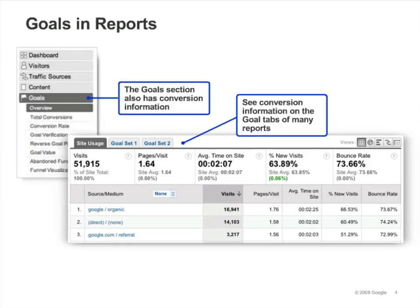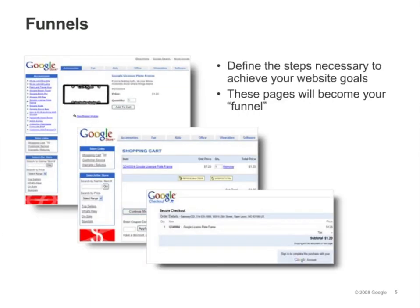You can see total conversions and conversion rates for each of your goals in your reports. For each URL destination goal that you define, you can also define a funnel. A funnel is the set of steps, or pages, that you expect visitors to visit on their way to complete the conversion.